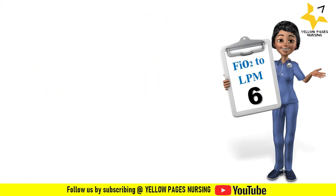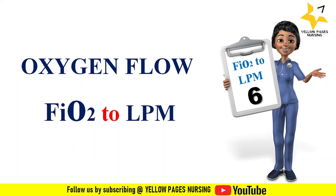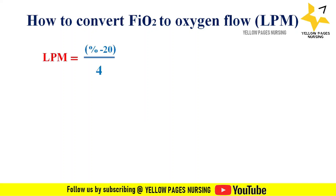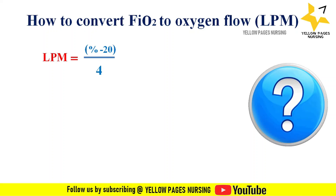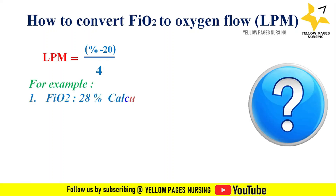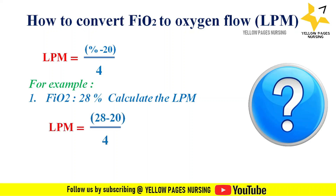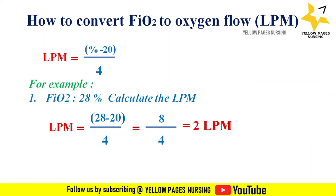Next is conversion of oxygen flow from FiO₂ to liters per minute. The formula is: liters per minute = (percentage of oxygen flow − 20) ÷ 4. For example, if FiO₂ is 28%: liters per minute = (28 − 20) ÷ 4 = 2 liters per minute.